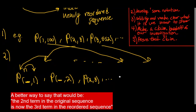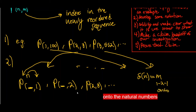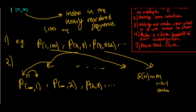There are a couple of rules to make this formal. We don't want two different terms going to the same index in the newly reordered sequence. That is, the function mapping n indices to m indices is one-to-one and onto — every natural number appears as the second component of some index, and no two n values map to the same m value. So (1, 100) and (2, 100) will never both appear.